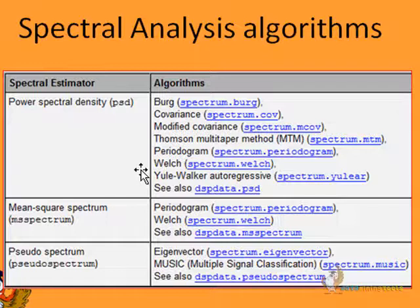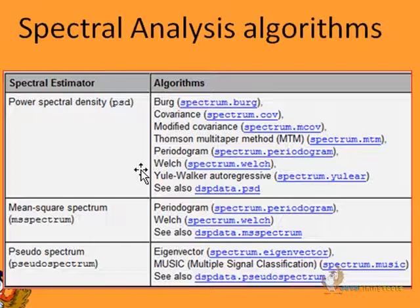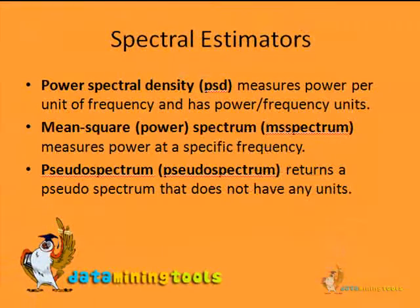We also have a mean square spectrum, for which the algorithms are periodogram and Welch, and we have the pseudo spectrum, which has the eigenvector and multiple signal classification (MUSIC) algorithms, among others.